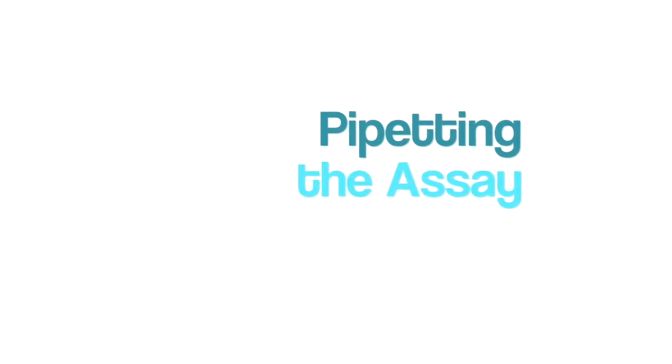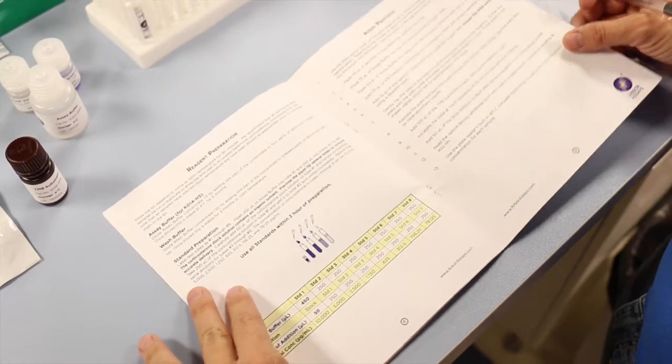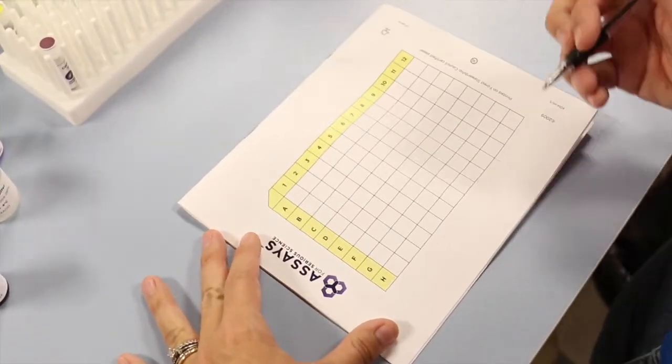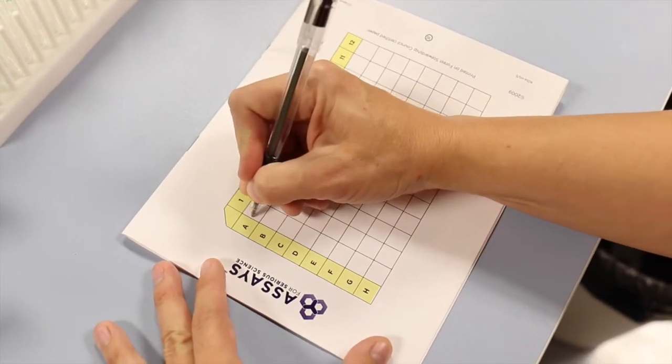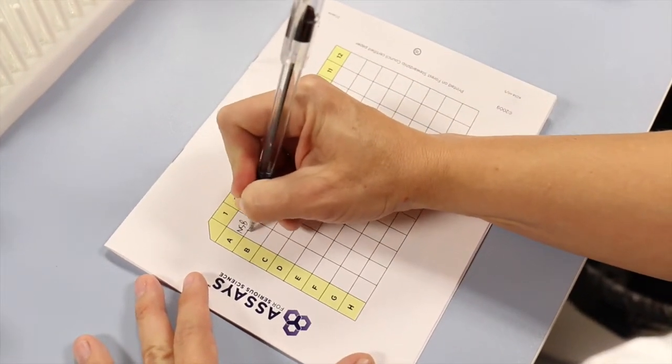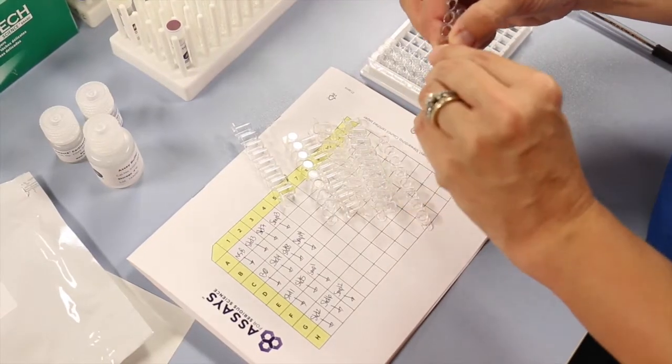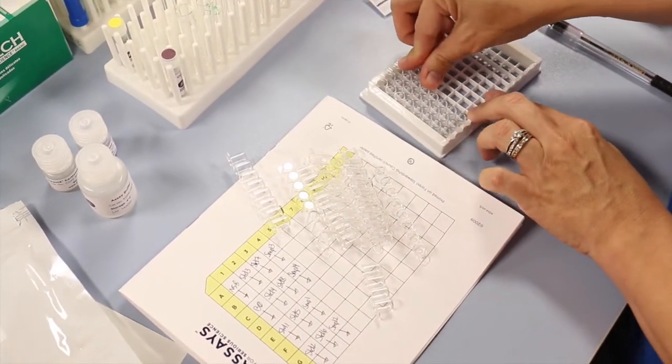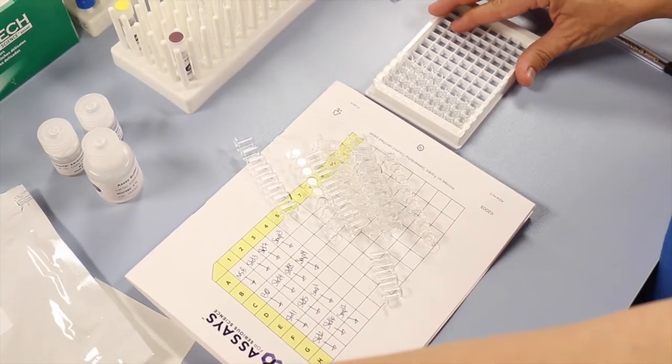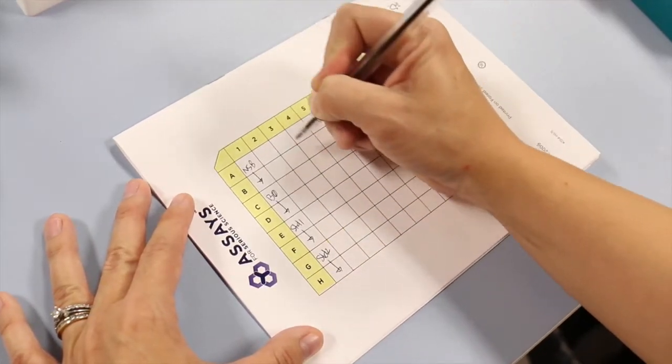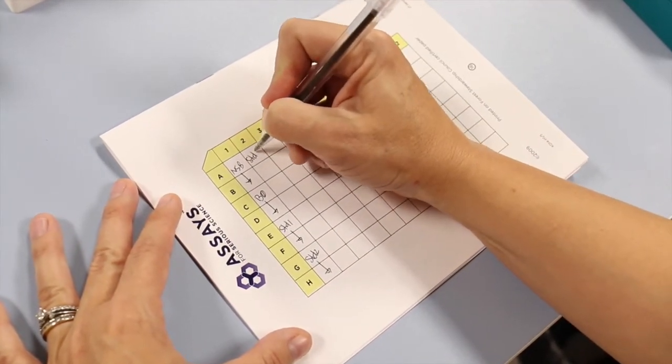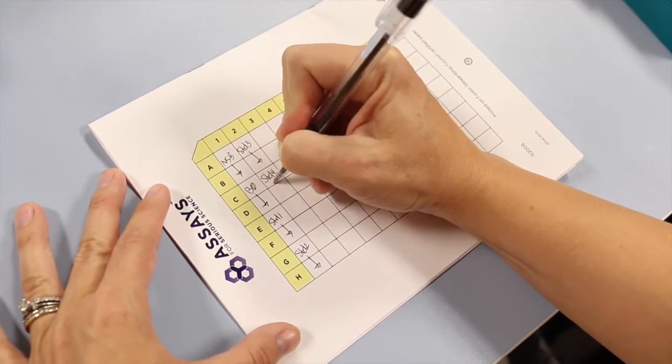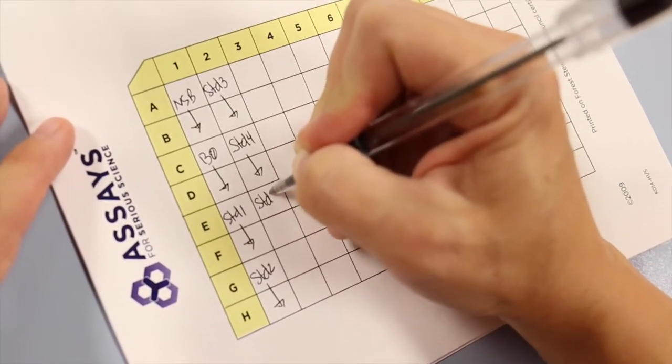For pipetting the assay, outline the position of each sample on the assay layout sheet provided on the back page of each kit protocol. Our break-apart strip well plates allow you to use just the wells you need for your experiment. If you pipette your standards and samples down the columns, you'll be able to get the best usage from the kit.